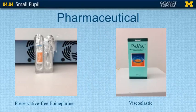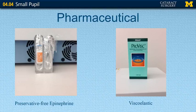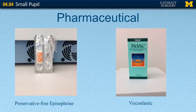Another way to increase pupil size during surgery is using medications. Preservative-free epinephrine is typically put in the BSS bottle during cataract surgery to help maintain pupil dilation. Using a higher molecular weight viscoelastic such as Provisc can also help keep the pupil dilated during surgery.